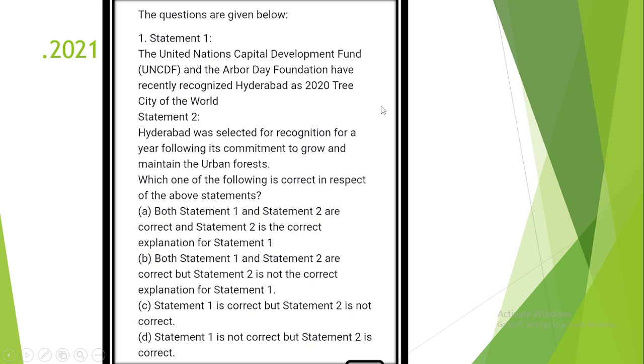Question number 1. The United Nations Capital Development Fund and the Upport Day Foundation have recently recognized Hyderabad as the 2023 city of the world. Statement 2: Hyderabad was selected for recognition following its commitment to grow and maintain urban forests. Answer is Option D. Statement 1 is incorrect and Statement 2 is correct.